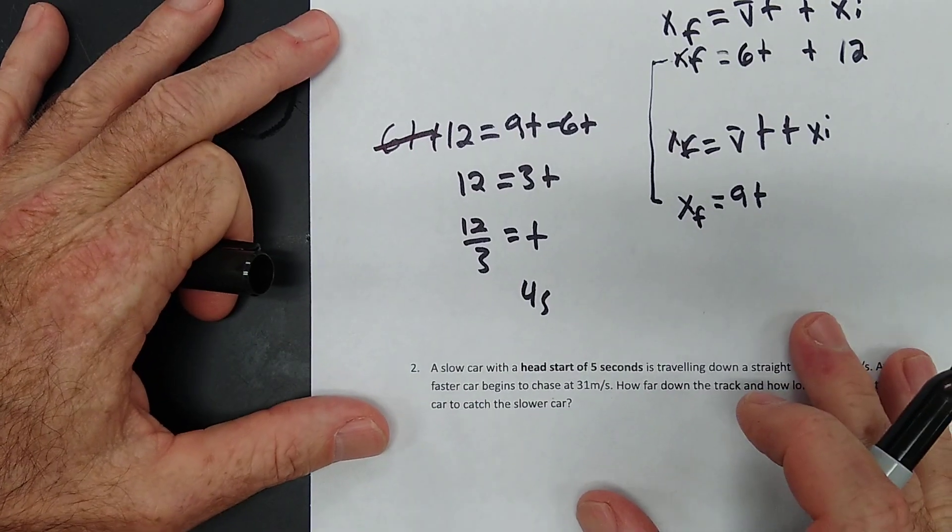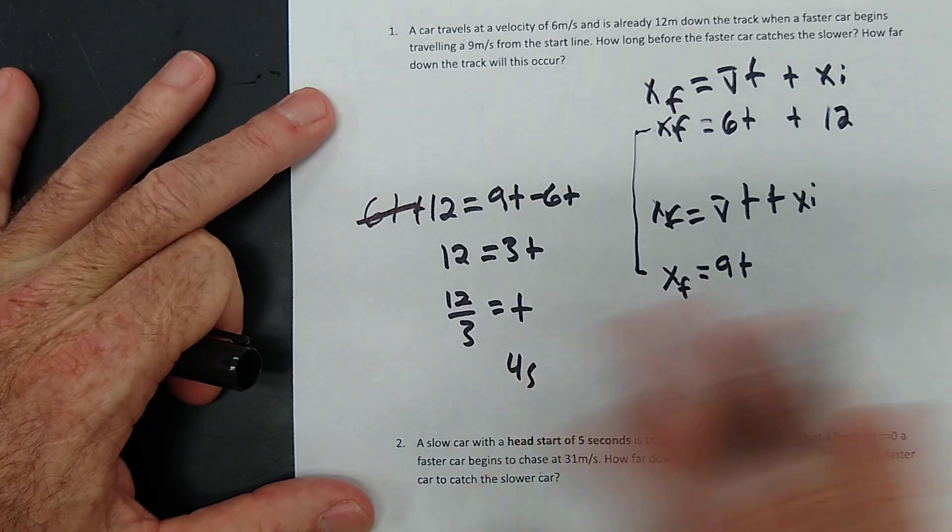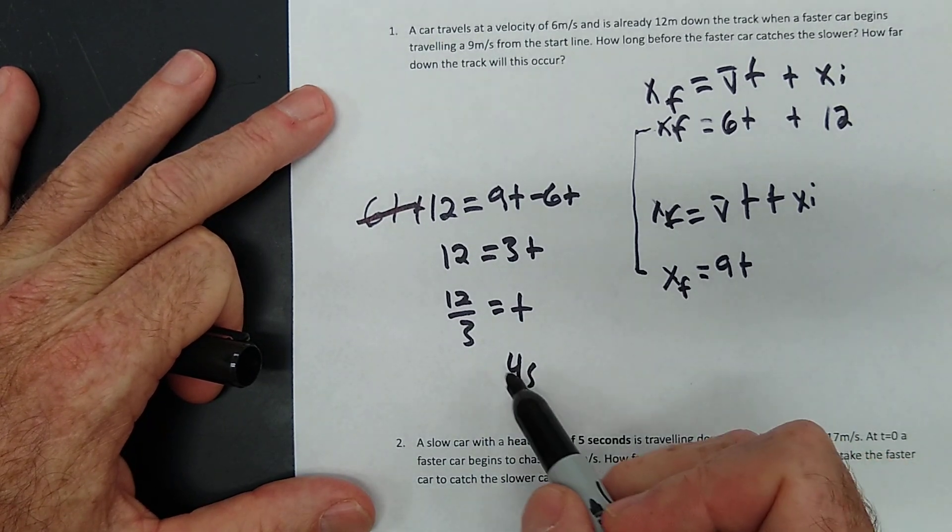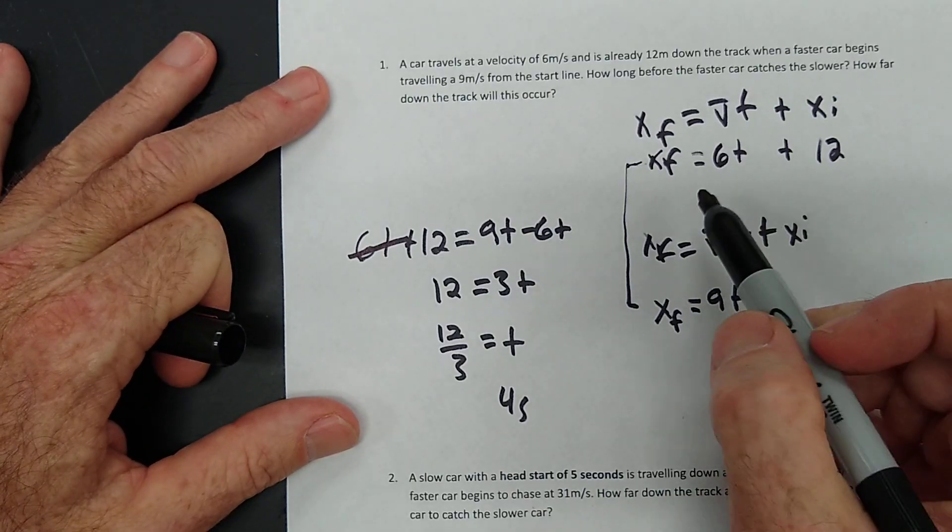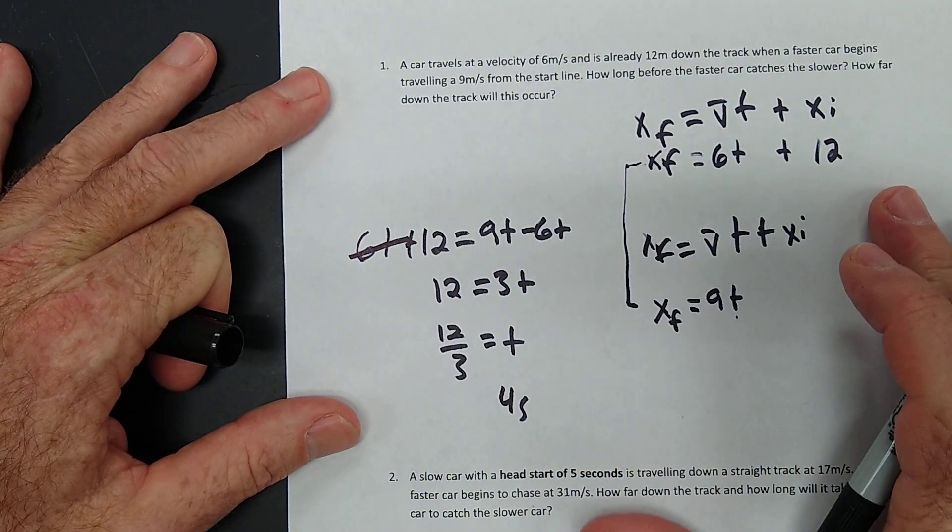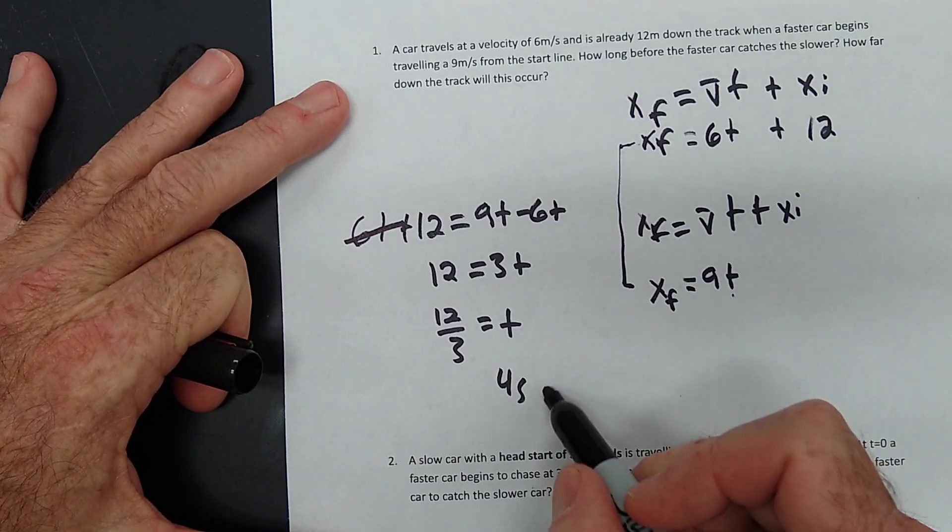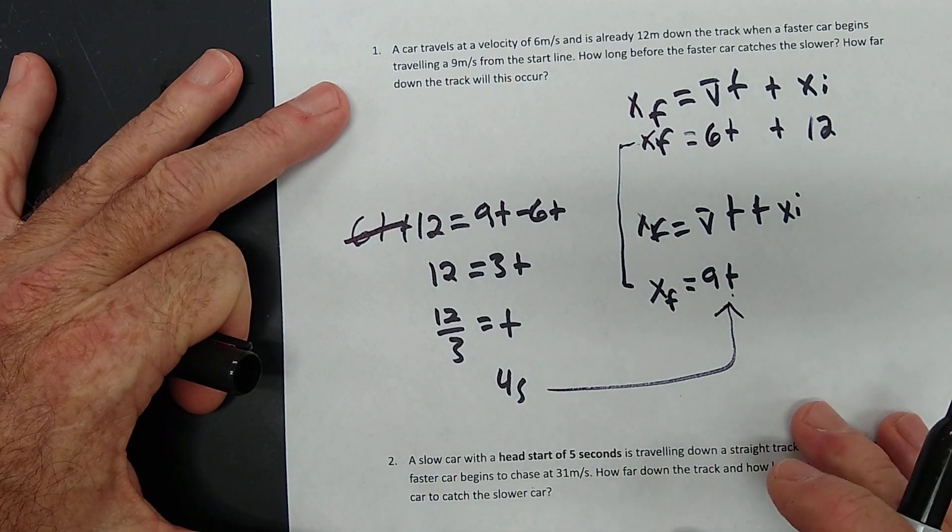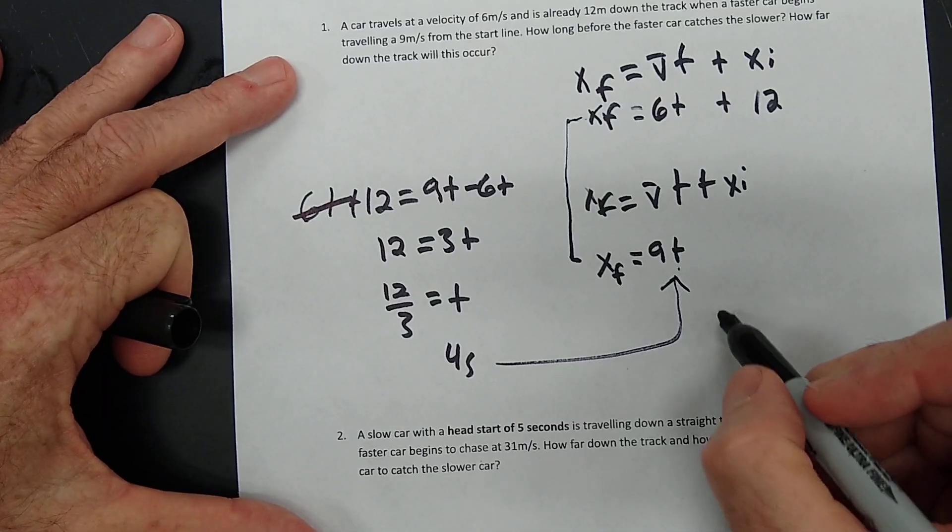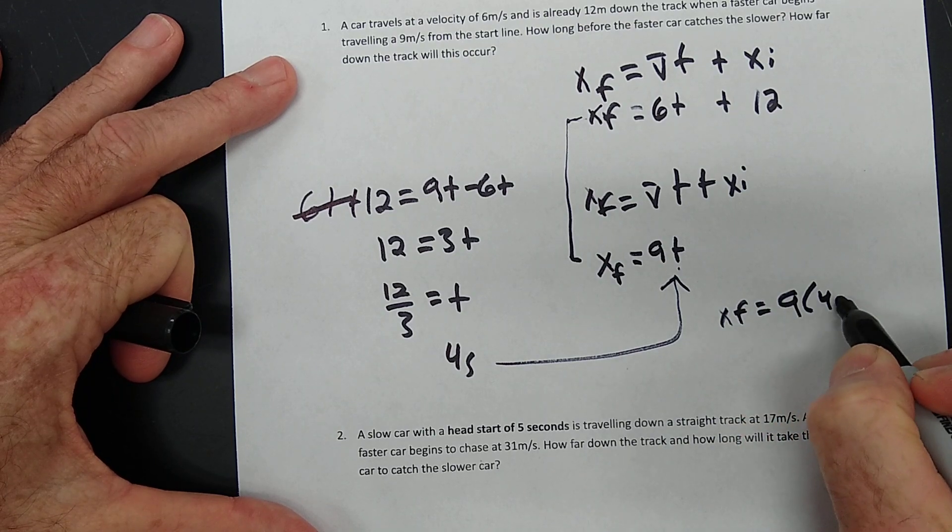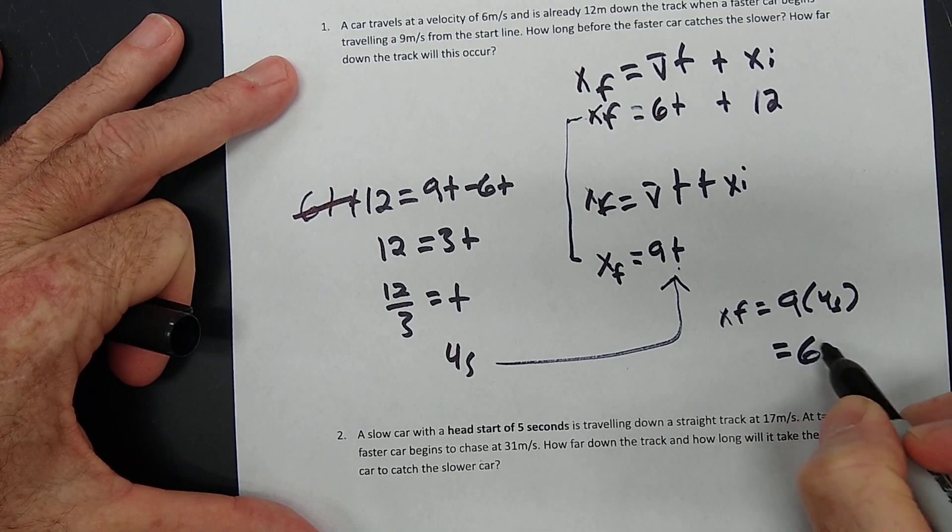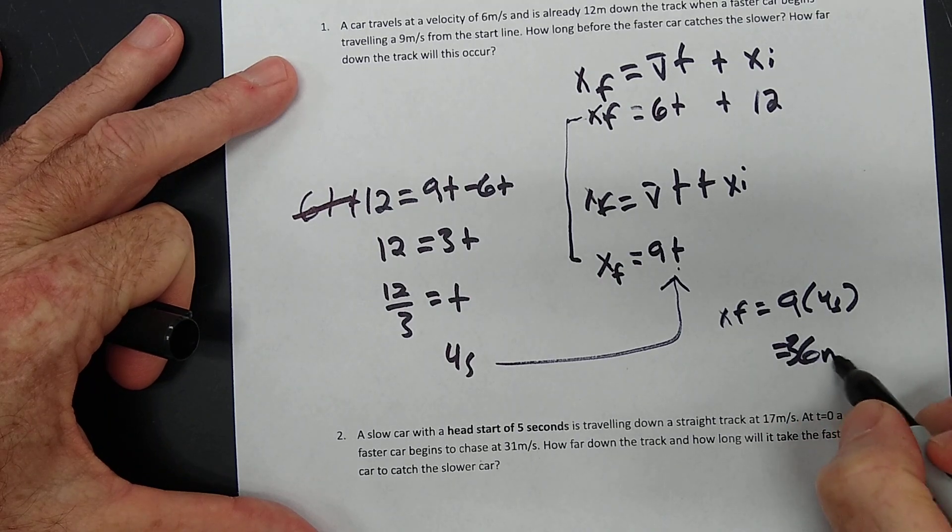Let's find out how far down the track either of the cars would be. Now, if we put 4 seconds for T here, or if we put 4 seconds for T here, you're going to get the same answer either way. So we're going to slap this 4 seconds into our faster car. XF equals 9 times 4 seconds. 36 meters down the track.